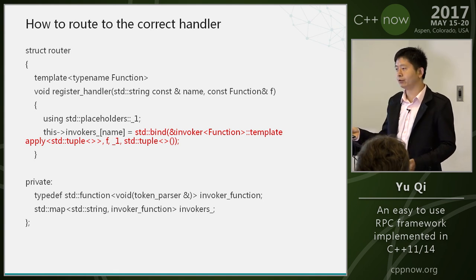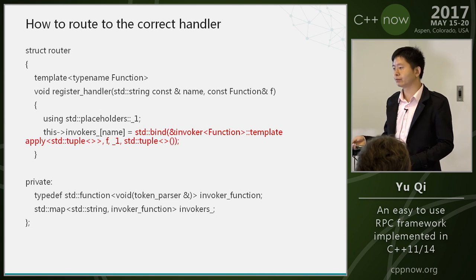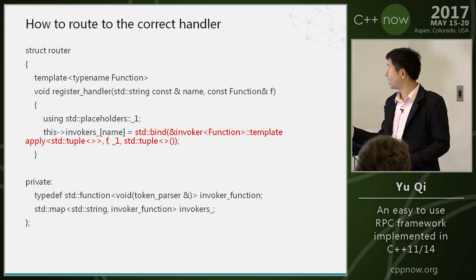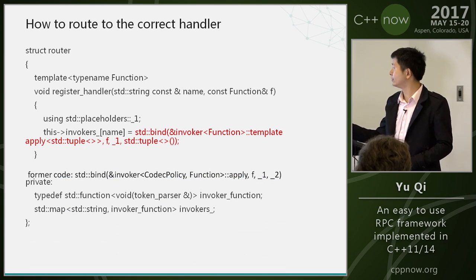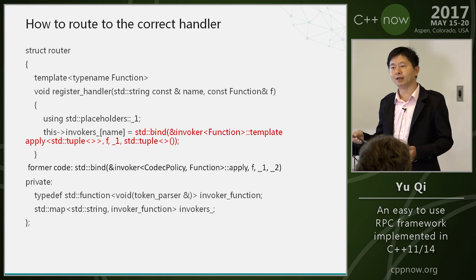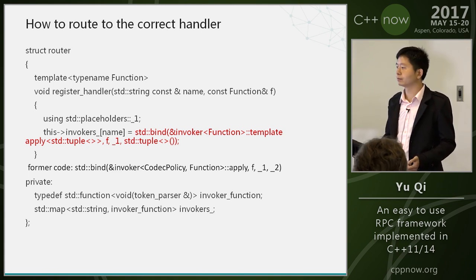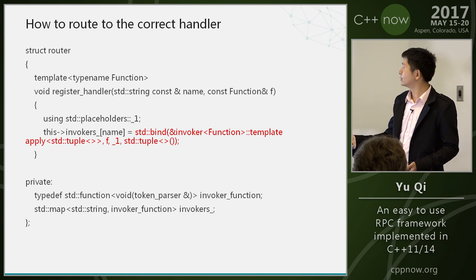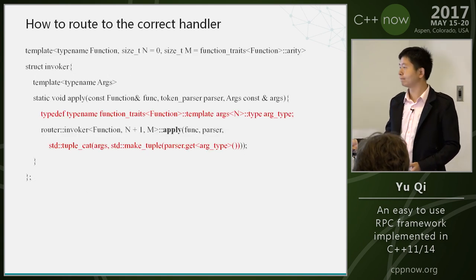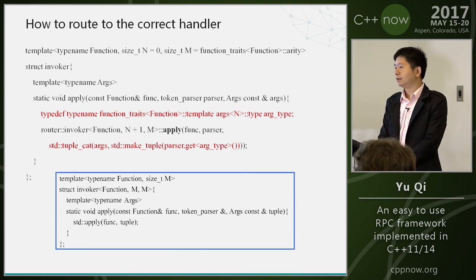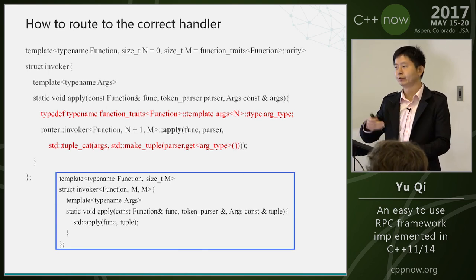Here we also use type erasure like before, but there is one key difference: I use a tuple as the argument. It's different from before because I need a tuple to hold all the arguments. The code uses recursion to process the arguments.